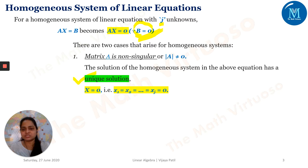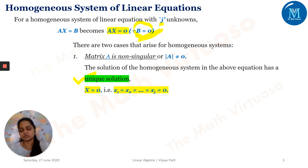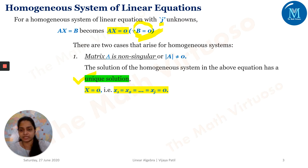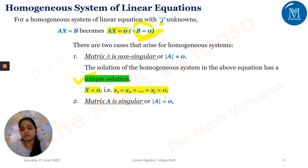Homogeneous system of equations means capital B equals zero. What does that mean? There will be no constant term in the equations — the constant terms will be zero. So X1, X2, ..., XJ — all of them should go to zero for the unique solution when determinant of A is not zero.